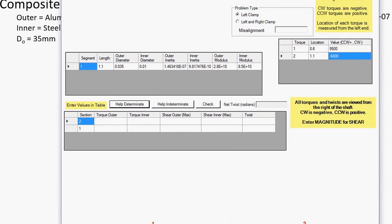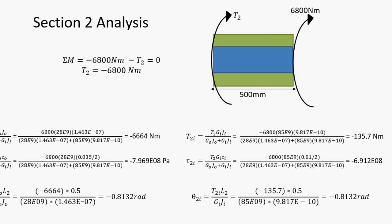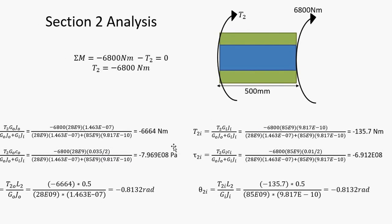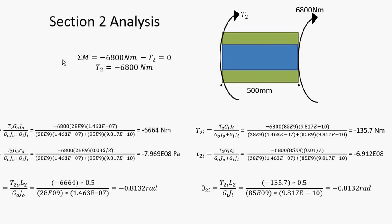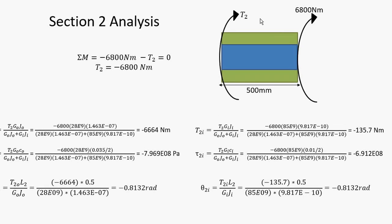Working from the right towards the left, we start with section 2 first. Do your summation of moments — assuming the reactionary torque is going clockwise, its value comes out negative, meaning it should actually be going counterclockwise to react against the clockwise torque. On the left I have all the outer material calculations, and on the right all the inner material calculations.